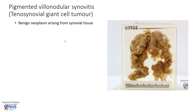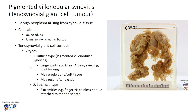This is a benign tumor that arises from synovial tissue and usually occurs in young adults. There are two main types of tenosynovial giant cell tumor. There is the diffuse type, also known as pigmented villonodular synovitis, which is what we just saw. This tends to occur in large joints such as the knee joint, giving rise to boggy swelling, pain, as well as joint locking. It may sometimes erode into the bone or underlying soft tissue, and the treatment is surgical excision, but these cases may recur.